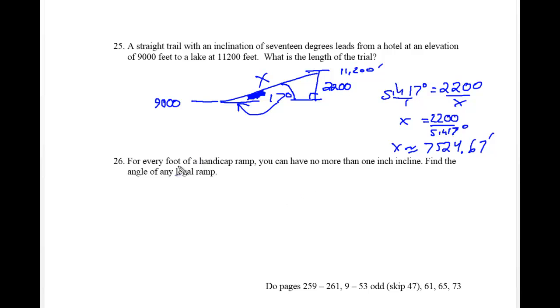All right, so now here's one last thing. It says for every foot of a handicap ramp, you can have no more than one inch incline. So we're going to find the angle of any legal handicap ramp. So it says for every foot of handicap ramp, so this right here is a foot, you can have no more than one inch of incline. So our job is to find the angle theta right here.